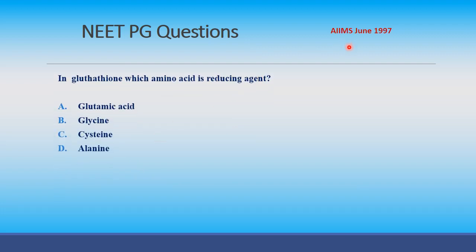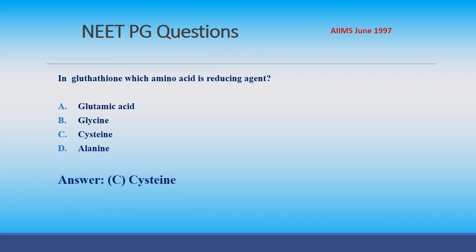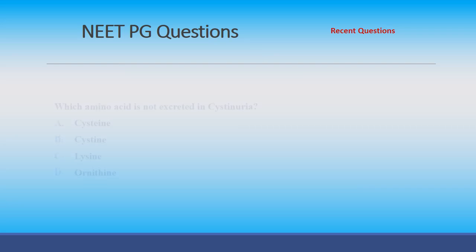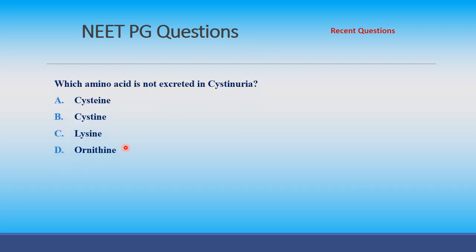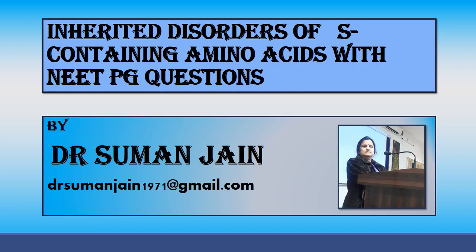PG question (AIIMS June 2000 / 1997): In glutathione, which amino acid is the reducing agent? Options: glutamic acid, glycine, cysteine, alanine. The answer is cysteine. Another recent question: Which amino acid is NOT excreted in cystinuria? Answer: cystine. Thank you very much — please like, share, and subscribe.